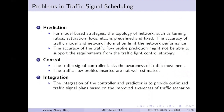From our perspective, there are many open issues that need to be solved in the traffic light control scheme design. Firstly, the prediction issue. For the model-based strategy, the topology of the network, such as the turning ratios, saturation flows, etc., is predefined and fixed. So the accuracy of the traffic model and the network information limits the network performance. Furthermore, the accuracy of the traffic profile prediction might not be able to support the requirements from the traffic light control strategy.